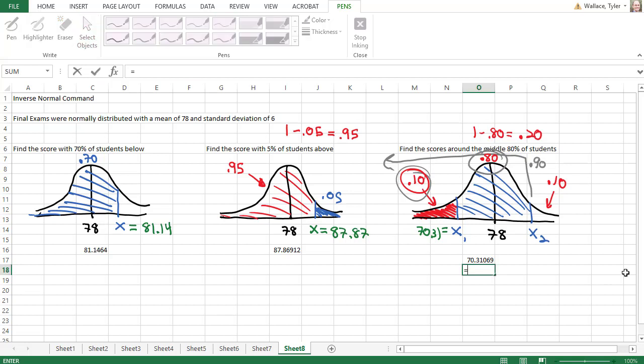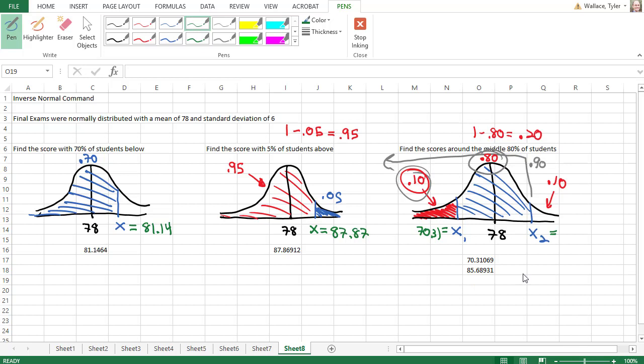So we'll type in equals norm.inverse, open a parentheses. And this time, we want a 90% area to the left, 0.90, where the mean is 78 and the standard deviation is 6. Hitting Enter, that tells me my X2 is 85.69 when we round. And so 80% of students, the middle 80% of students, are falling between a test score of 70.31 and 85.69.